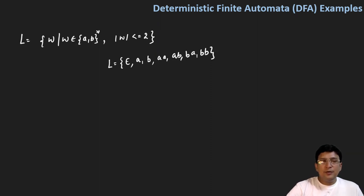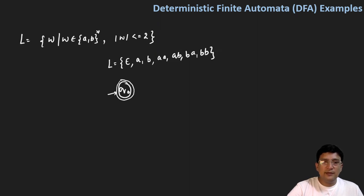Let's form the automata for this. If q0 is the start state, the smallest string is epsilon, so this state should be the final state. And then if I am accepting A or B, I should go to state q1.